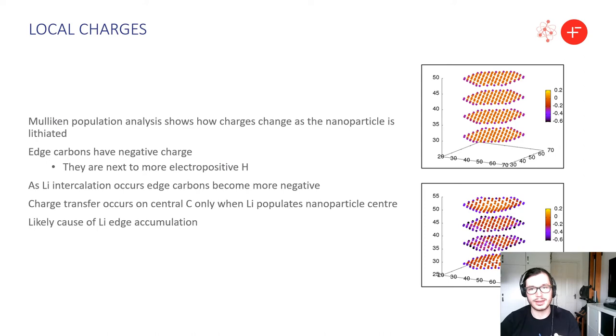This is because they are next to their slightly more electropositive counterparts of hydrogens and this isn't necessarily what occurs in real life it was just a convenient termination for us to use. As lithium intercalation occurs the edge sites become more and more negative, so at the top here we have zero lithium so this is just the plain graphite nanoparticle. At the bottom we have a completely fully saturated nanoparticle and we can see that they've got darker and darker with time indicating that as the lithium intercalates they give up their electron into the specific carbons or locally at those carbons.